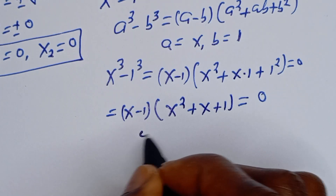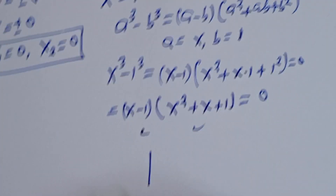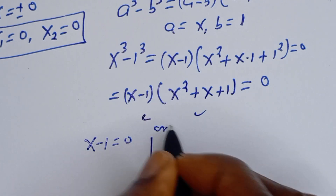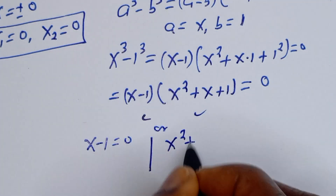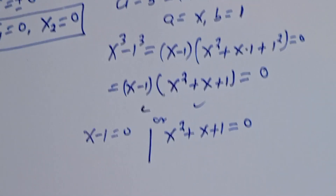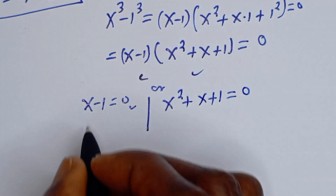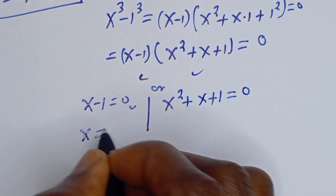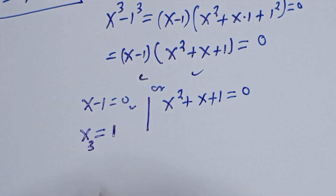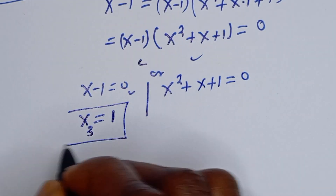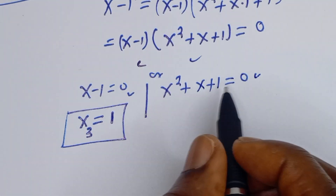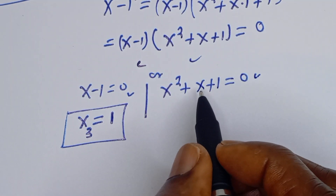From here, there are two cases. The first case is S minus 1 is equal to 0, or S squared plus S plus 1 is equal to 0. From the first case, S is equal to 1. The second expression S squared plus S plus 1 is equal to 0 is a quadratic equation.